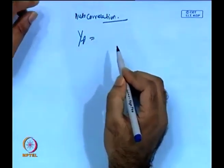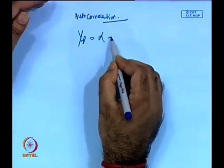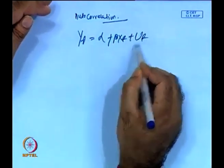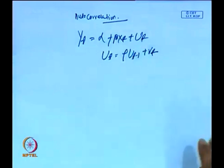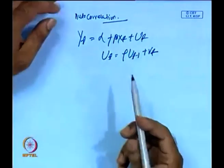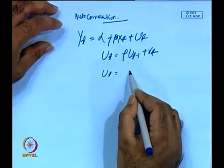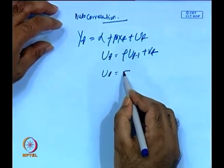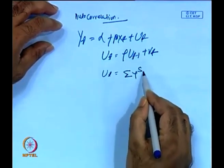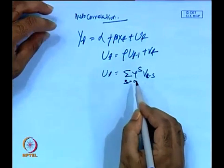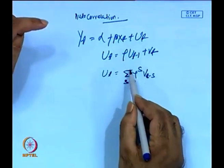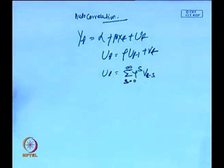Let me highlight what is the basic issue of autocorrelation. For autocorrelation, we have the function y_t equal to alpha plus beta x_t plus u_t. Here u_t is equal to rho u_{t-1} plus v_t. If we expand, then u_t will ultimately come to summation rho to the power s, v_{t-s}, s equal to 0 to infinity. When it equals infinity, the structure of autocorrelation is like this.